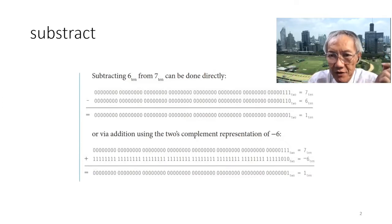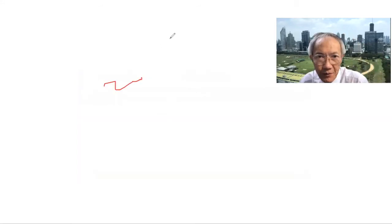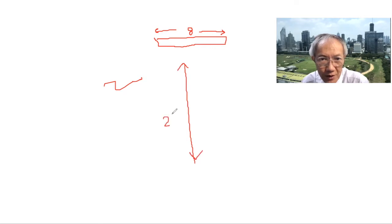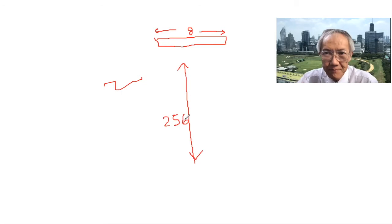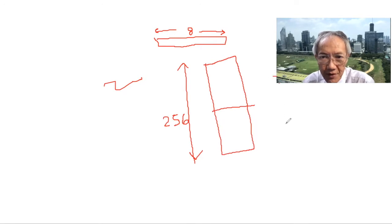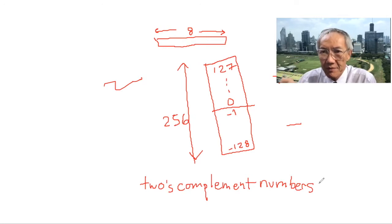If you want to subtract, the easiest way is to change one number into a negative number and then use addition. We have an 8-bit system, so the total number of values is 256. We divide it in two parts — positive numbers from zero to 127, and negative numbers from minus one down to minus 128.